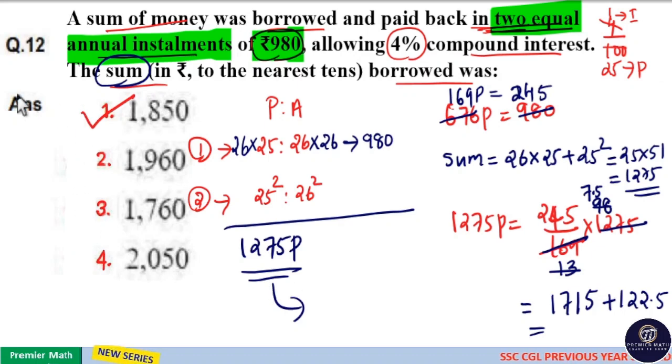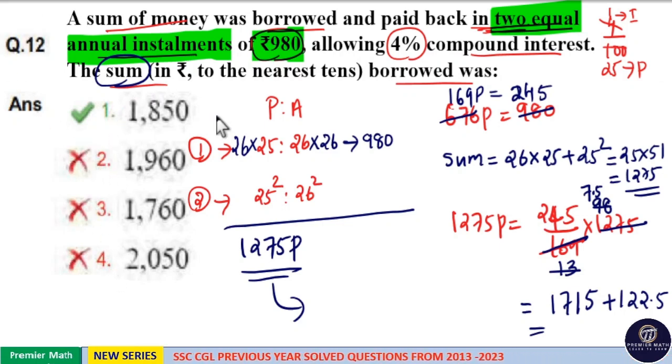So option 1 is your answer. Your answer is 1850. 1850 is your answer. So sum is equal to 1850.